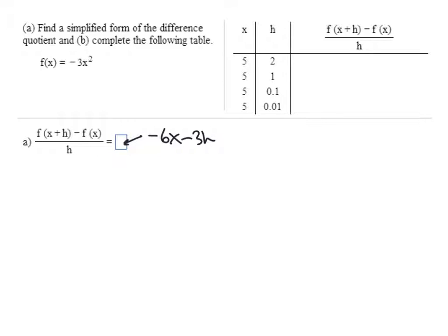So what we can do for the first entry of our table is simply say, when x is 5 and h is 2, we get negative 6 times x minus 3h. That's negative 6 times 5 minus 3 times 2, which works out to be negative 36.